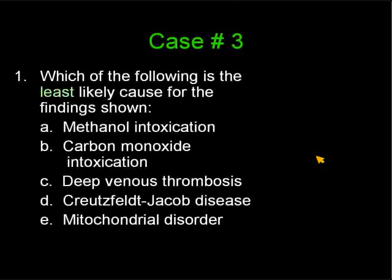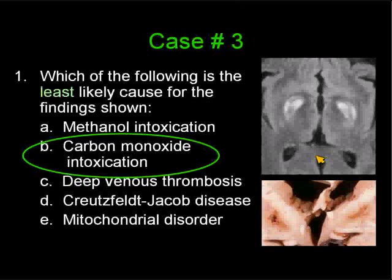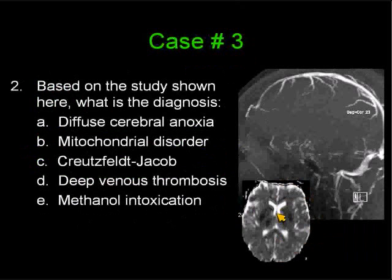Let's see the answer. The majority of you said Creutzfeldt-Jakob disease. I think the least likely cause is carbon monoxide, because all of the other entities may involve the basal ganglia in a diffuse fashion, but carbon monoxide in the majority of cases involves only the globus pallidus, particularly the medial aspect. In this case, you see involvement of both the medial and lateral aspects of the globus pallidus bilaterally. In the majority of cases, the pattern of involvement in carbon monoxide intoxication is restricted to only the globus pallidus and not the rest of the basal ganglia.